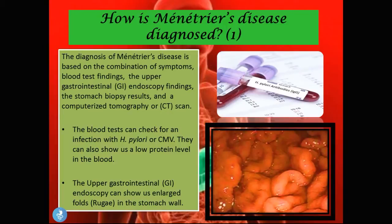So how is Ménétrier's disease diagnosed? The diagnosis is based on a combination of symptoms, blood test findings, upper GI endoscopy findings, stomach biopsy results, and a CT scan. The blood test can check for an infection with H. pylori or CMV, and can also show a low protein level in the blood. As mentioned earlier, because of the increased mucus production in the stomach, we have low protein levels in the blood — called hypoproteinemia — which can be picked up on a blood test.